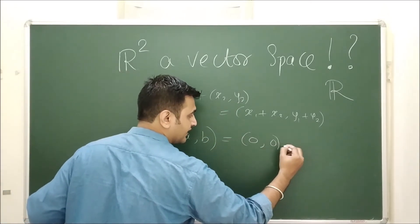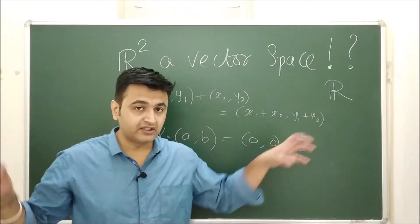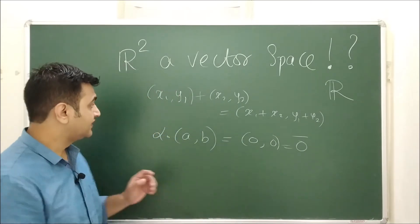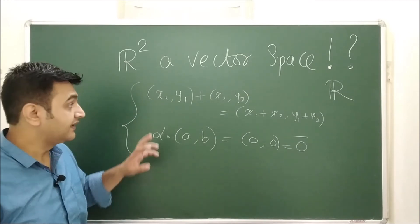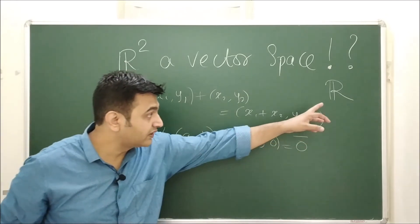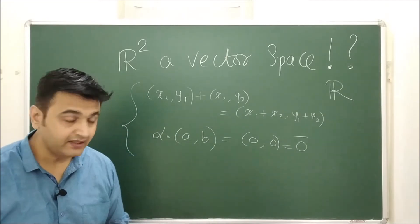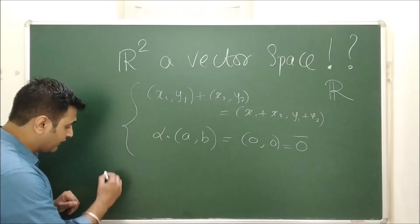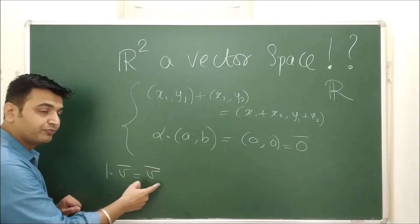But he may define α into (a,b), where α is a real number and (a,b) is in R², we define this to be (0,0), that is the zero vector. So you take a vector and you take a real number, the scalar, the product is always zero. So this is my operation defined on this set. Then is R² a vector space over R under this operation? Answer is no. Why? Because addition is not a problem, problem is here.